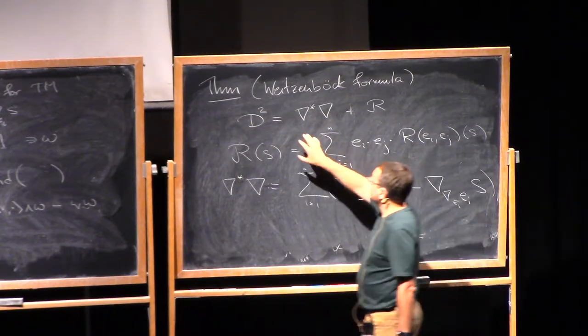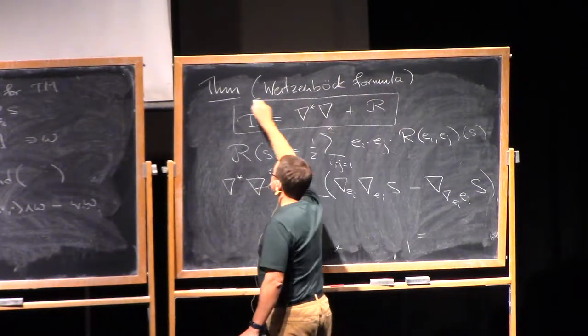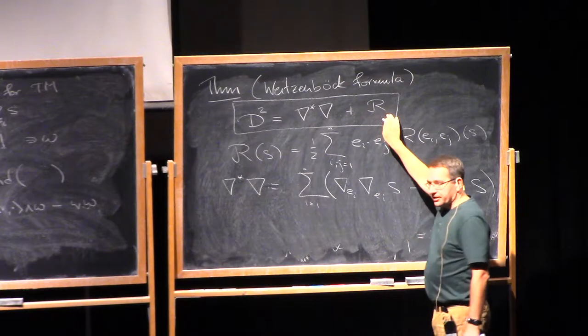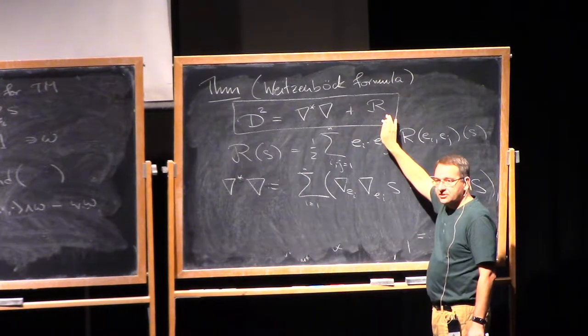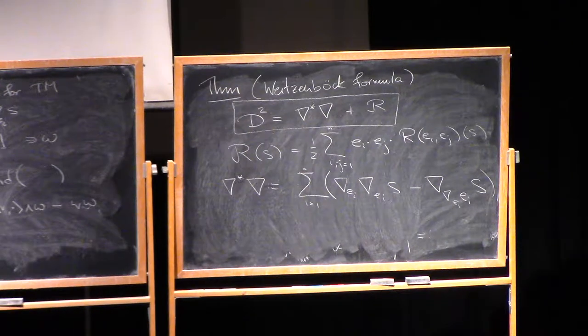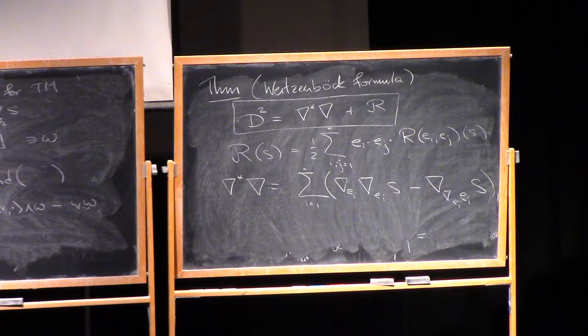Right, now, what this formula, the Weizenberg formula tells you, essentially, is that the square of the Dirac operator is a Laplacian plus an algebraic term. So something that physicists were looking for for many years. All right, are there any questions to that?